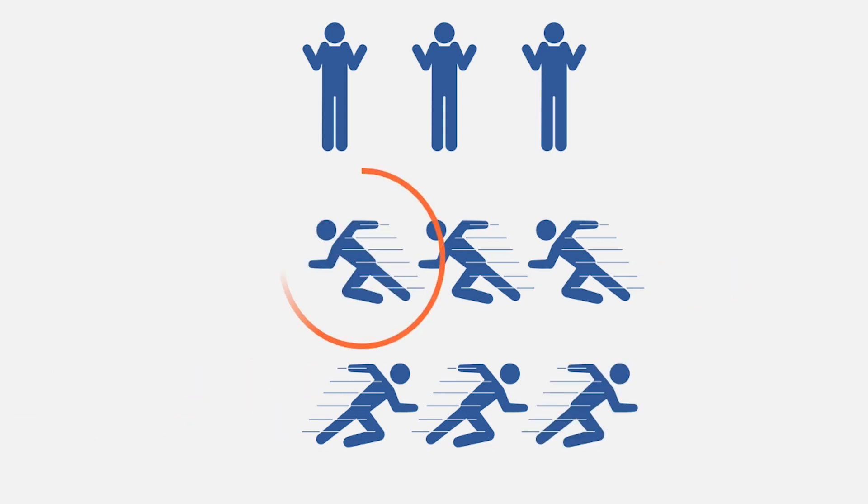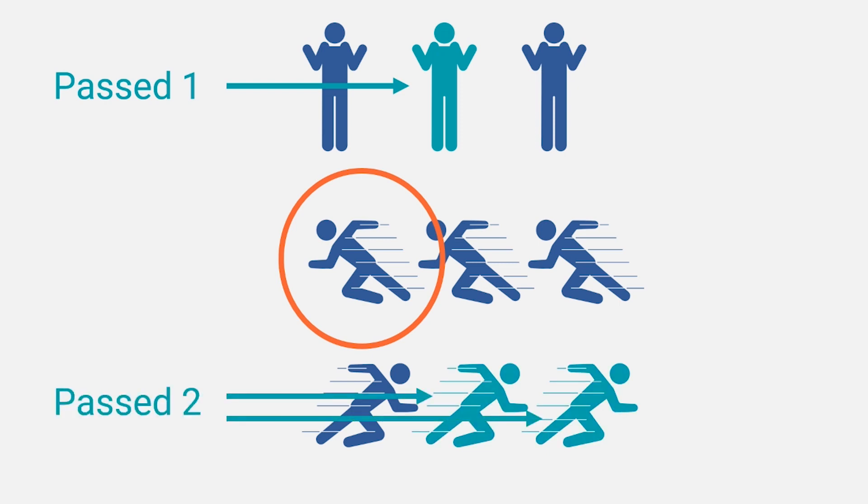The group running to the left. They moved, or jumped, past one person from the first group. But they jumped past two people from the third group. So they jumped different distances at the same time. How is that possible?